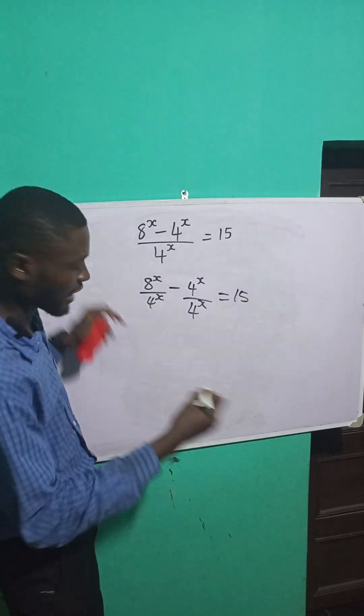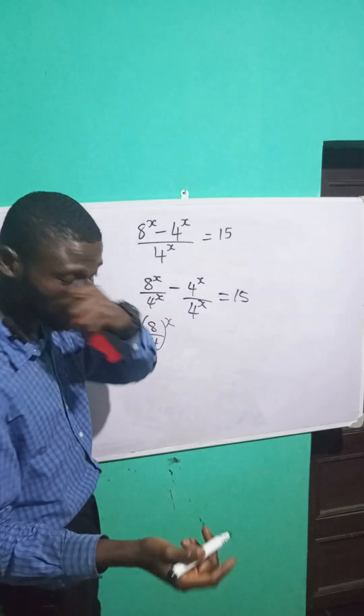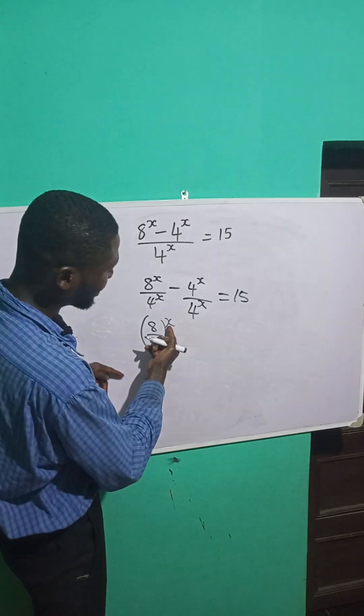These share the same power. I can group them together like this, 8 over 4, and maintain the power. From the law of indices, since they share the same power, I'll group them together and maintain the power.